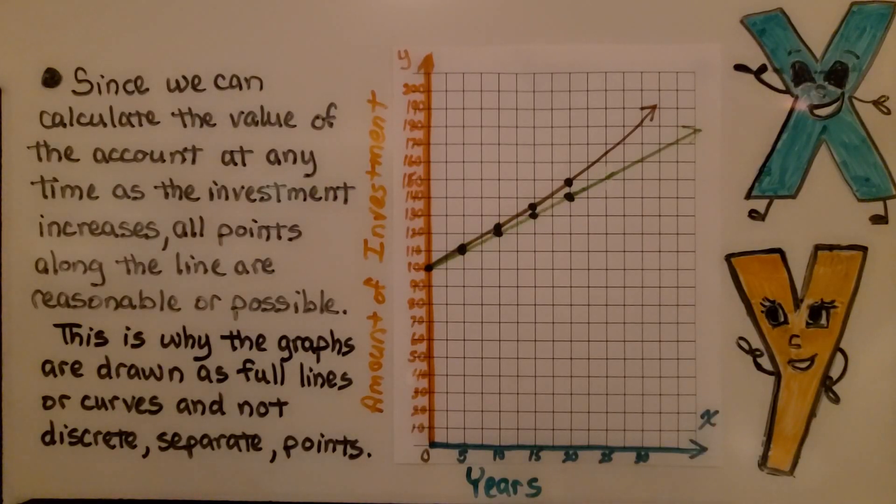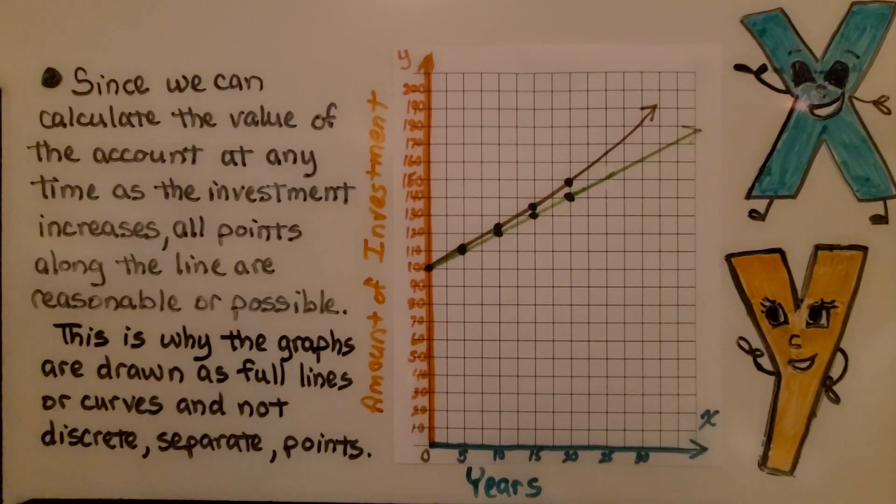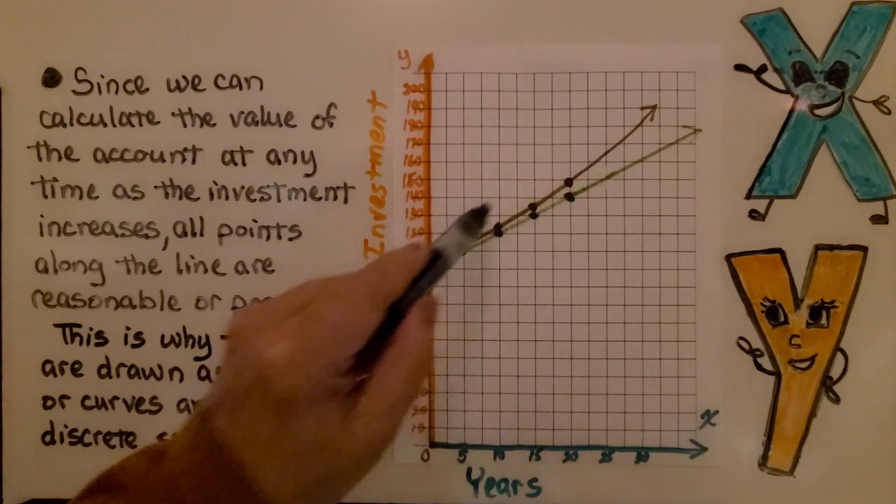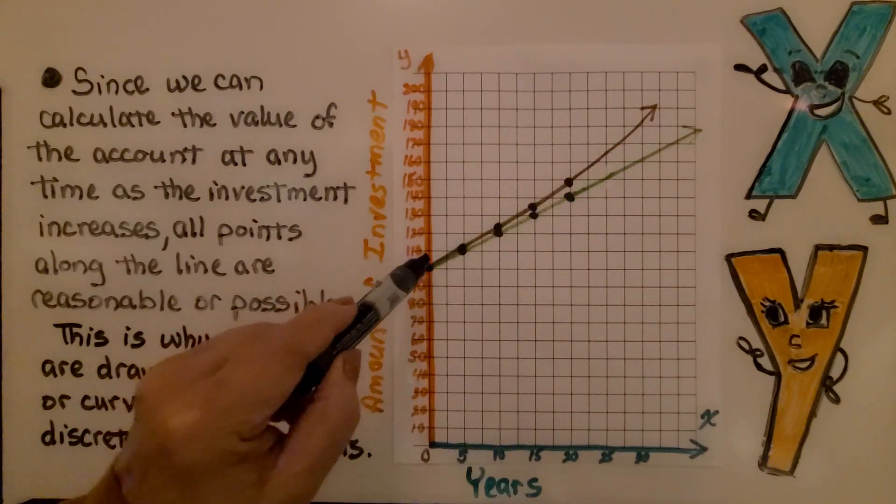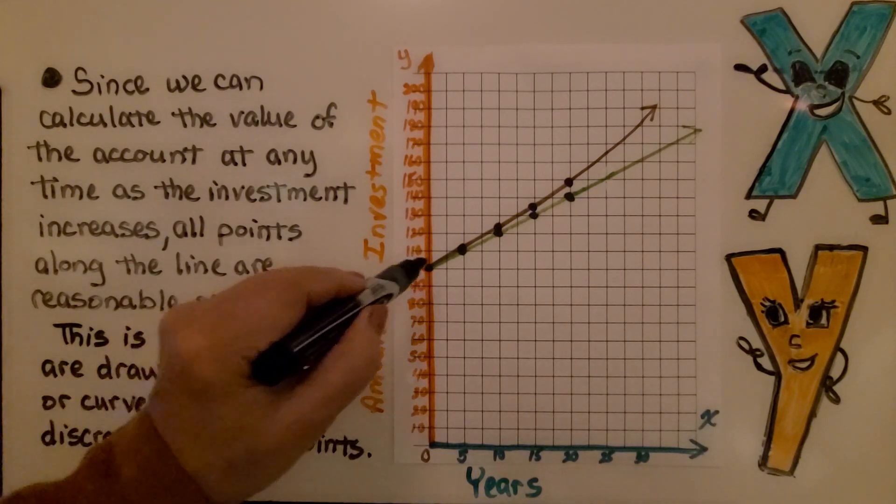Since we can calculate the value of the account at any time as the investment increases, all points along the line are reasonable or possible. This is why the graphs are drawn as full lines or curves and not discrete separate points. That is why the lines are drawn so that the points are connected, because we can calculate the value of the account at any time as the investment increases.